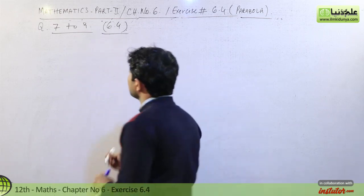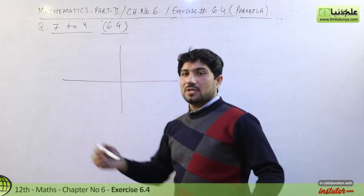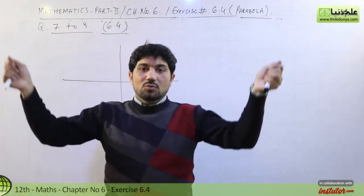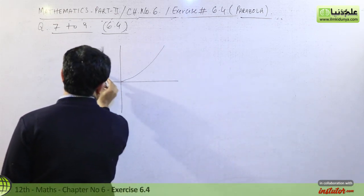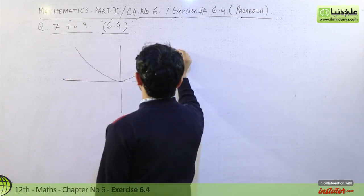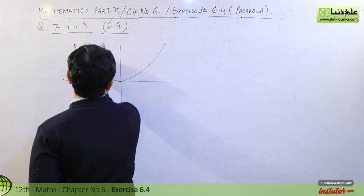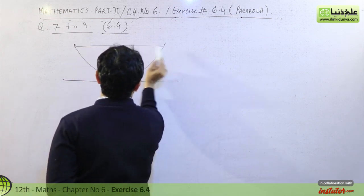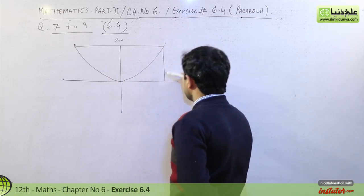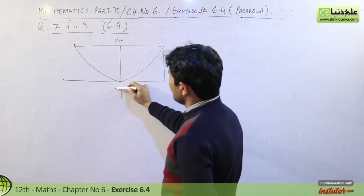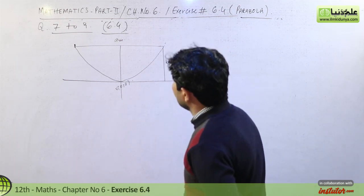This is an interesting question. Let me show you the diagram. The suspension bridge cables form a parabola. The span is A meters and the height is B meters. The vertex has been placed at the origin (0, 0).